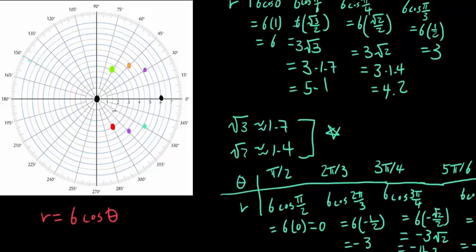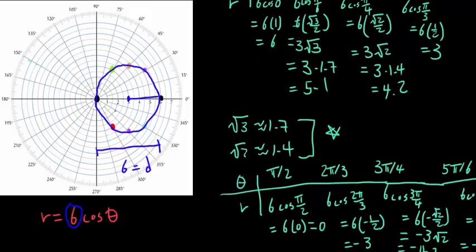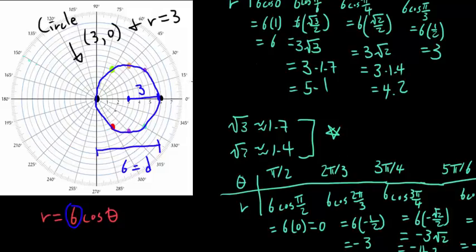When we connect through the dots, what shape are we going to get? It's going to be a circle. The 6 in our equation is going to be the diameter of the circle, so D equals 6 and radius equals 3. So when we graph it, we get a circle centered at (3, 0) with a radius of 3.